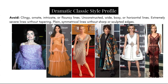Also avoid extremely severe lines without tapering — one white dress showcases the opposite of tapering as it flares out so much. Finally, avoid plain symmetrical lines without sharp or sculpted edges. One dress is very ornate in detailing, which doesn't work well for this type, and because of the lightness of the fabric and that ornate detailing it has a very soft effect that lacks the sharpness that would be best for Diane. It comes off as a little bit too delicate, with no sharpness in the edging.